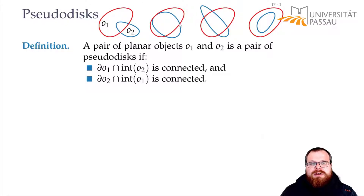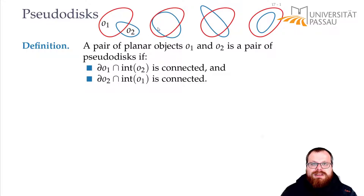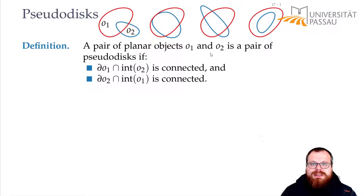In the second example, the boundary of O1 intersected with the interior of O2 is not connected because it goes up to here, then the boundaries meet, and then we have a second connected component — so this is not a pair of pseudodisks. In the third example, it's even clearer: we have two connected components in both the blue and the red, so this is also not a pair of pseudodisks.